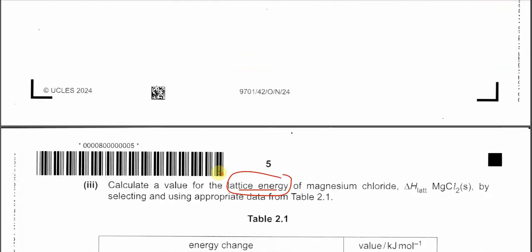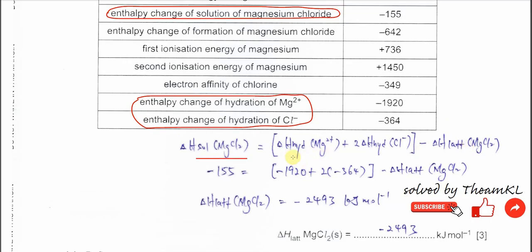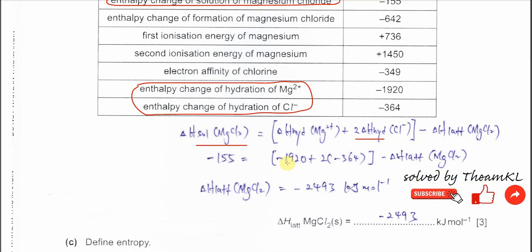Rearranging, the enthalpy change of solution of magnesium chloride equals the sum of hydration enthalpies minus the lattice energy. Be careful: the hydration enthalpy must sum Mg²⁺ and two times Cl⁻. So: −1920 + 2×(−364) minus the lattice energy. Rearranging gives a lattice energy of −2493 kJ mol⁻¹.